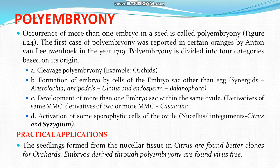Polyembryony is divided into four categories based on its origin: first, cleavage polyembryony (example: orchids); second, formation of embryo by cells of the embryo sac other than the egg — synergids (Aristolochia), antipodal cells (Ulmus), and endosperm (Balanophora); third, development of more than one embryo sac within the same ovule from derivatives of the same megaspore or derivatives of two or more megaspore mother cells (Casuarina); fourth, activation of some sporophytic cells of the ovule — nucellus or integument — as in Citrus and Syzygium.